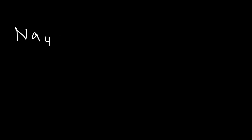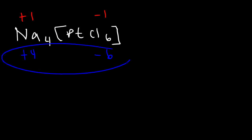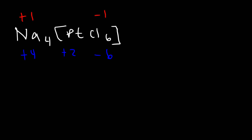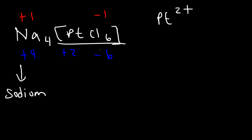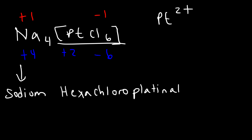For Na4PtCl6, sodium has a plus one charge and chlorine has a minus one charge. That gives us plus four minus six, so platinum must be plus two for the charges to add up to zero. Na is called sodium. We have six chlorine atoms, so it's hexachloro, and the Latin name for platinum is platinate, with an oxidation state of two. The full name is sodium hexachloroplatinate(II).